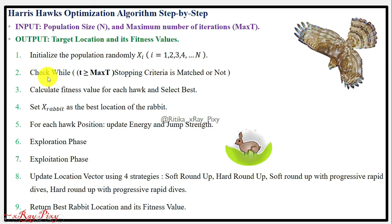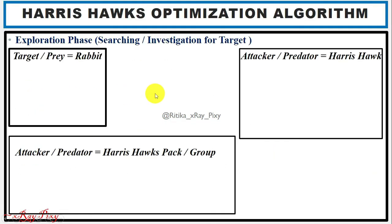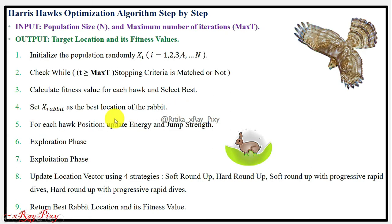In step 2, we check whether the stopping criteria is matched — whether the current iteration t is greater than or equal to the maximum number of iterations. If not, in step 3 we compute the fitness value for each hawk and select the best. In step 4, we set the rabbit position as the best location. In step 5, for each hawk we update the energy level and jump strength for the rabbit. Steps 6 and 7 cover the exploration and exploitation phases, and step 8 updates the hawk positions in the search space.